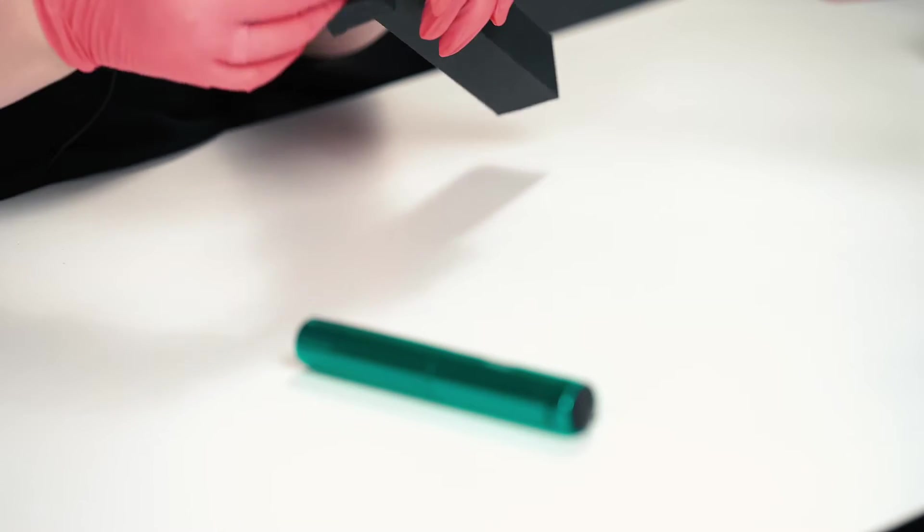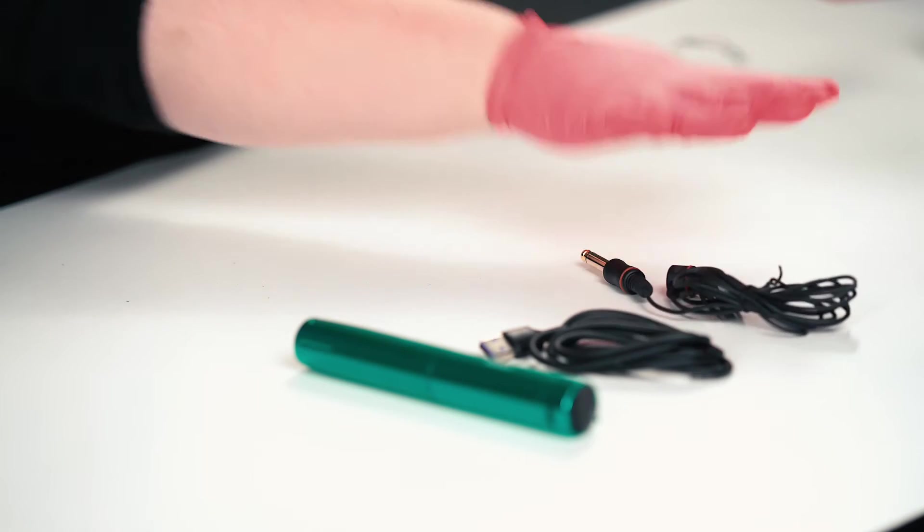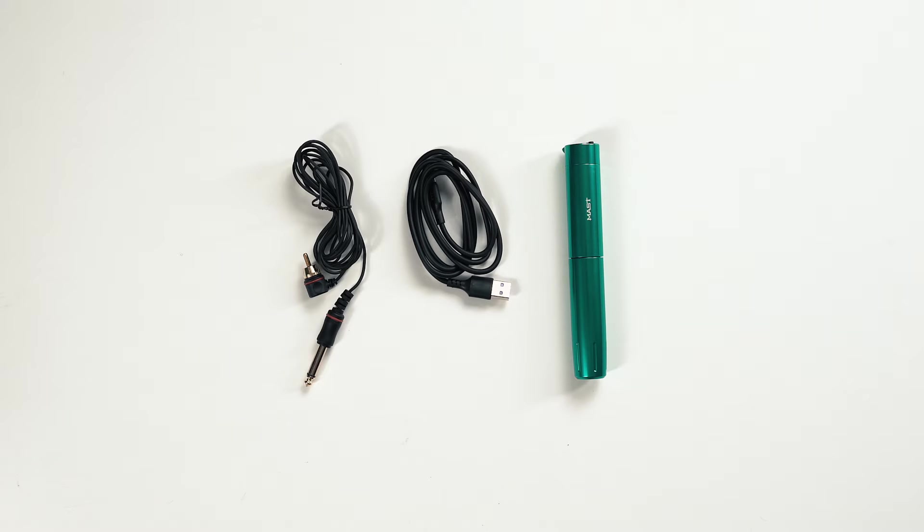One unique point on the Y22 is it's actually convertible. Out of the box, you get the machine, a charging cable for the battery pack, and an RCA cable for running the machine with a standard power supply. We generally recommend the Peak Surge.